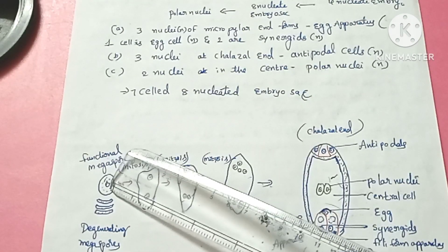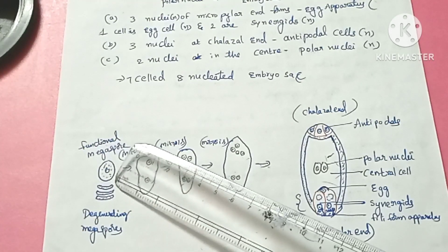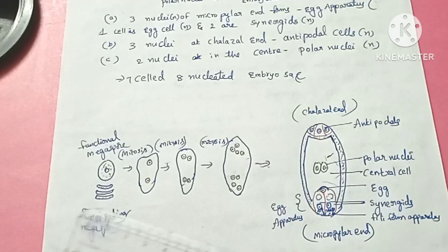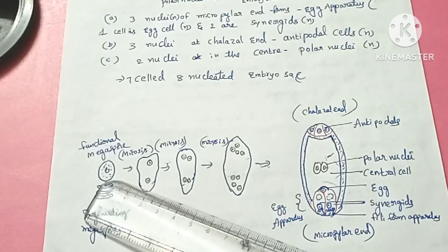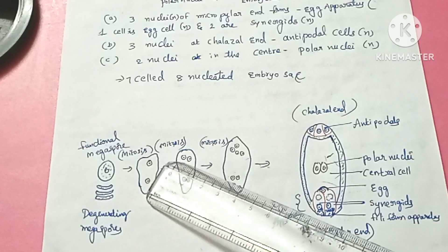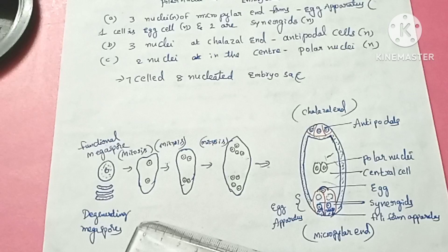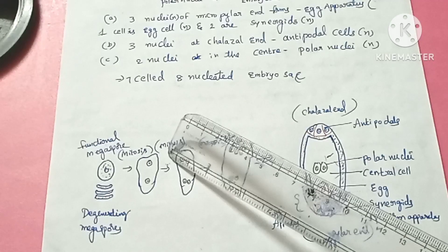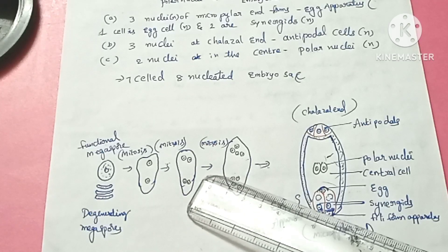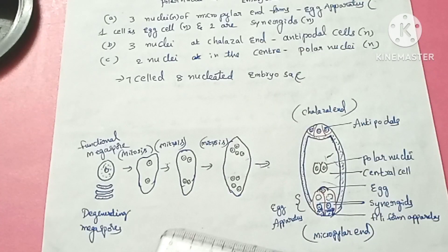Looking at the Polygonum type: there is one functional megaspore, while the three on the micropylar side degenerate. The functional megaspore undergoes mitosis, producing two nuclei. These two nuclei move to opposite ends of the embryo sac.